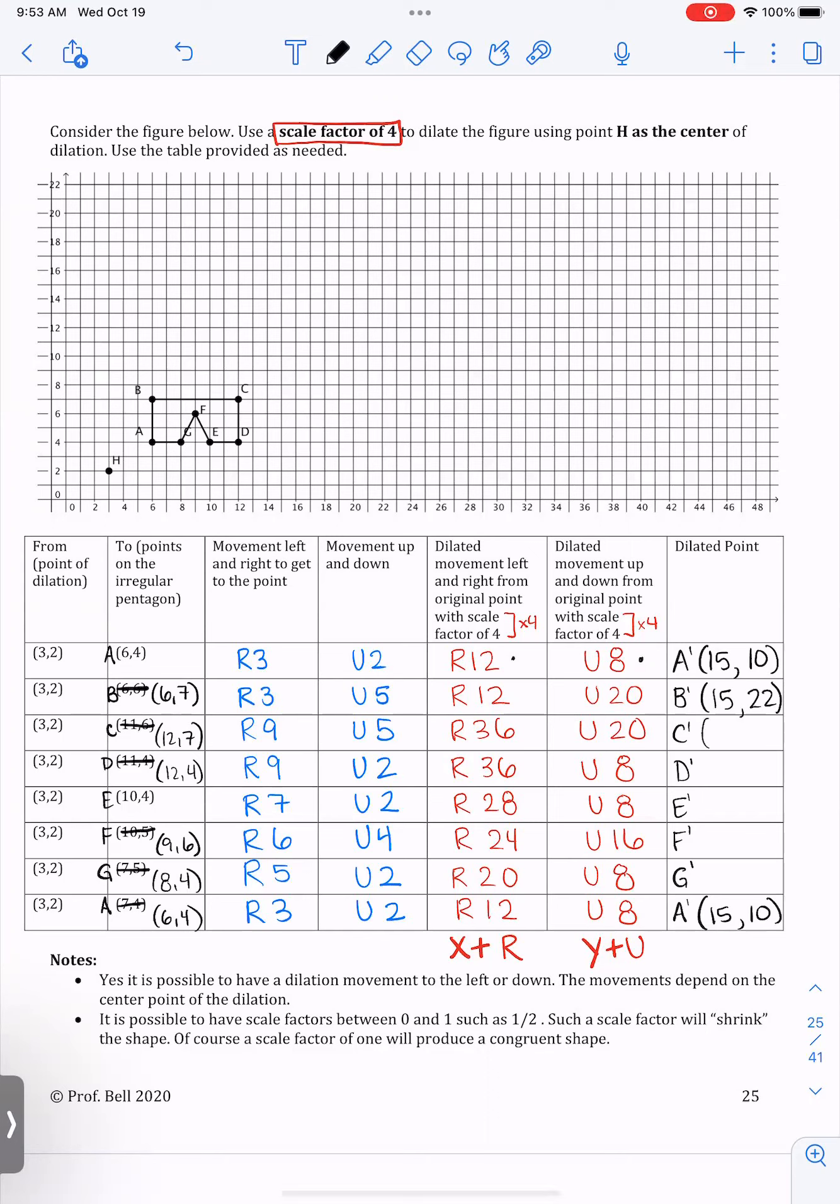So we're going to do it again. I started at three comma two and I move right 36. So three plus 36 is 39. And then I go two plus 20 and that's 22. I'm going to keep doing that. OK, I'm still at 39 because I'm doing three plus 36, but this time it's two plus eight. So I'm at 39 comma 10.